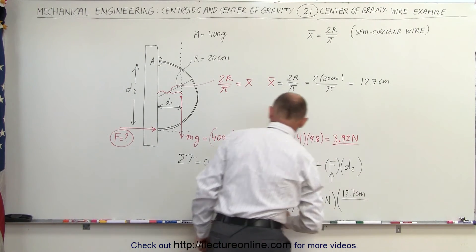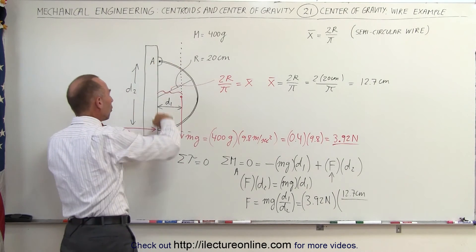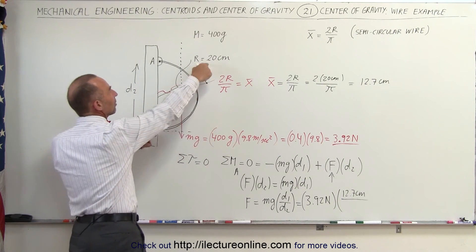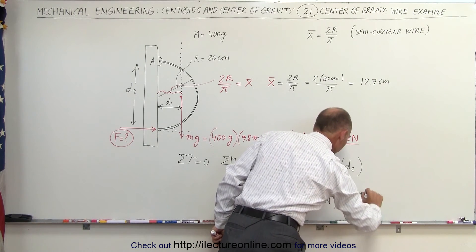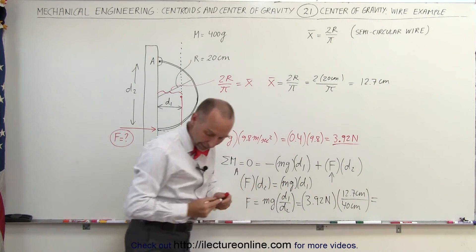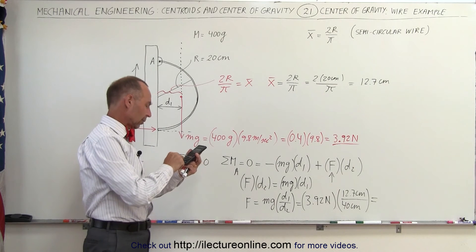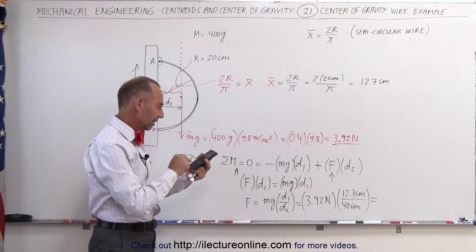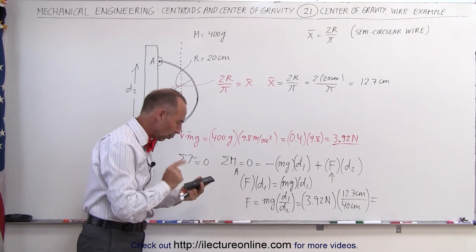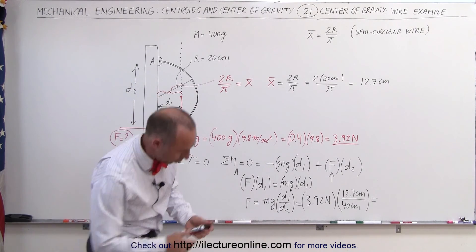Divided by distance 2, which is twice the radius of the wire. The radius is 20 centimeters, that makes that 40 centimeters. Then with the calculator, 3.92 × 12.7 / 40 = 1.24 newtons.